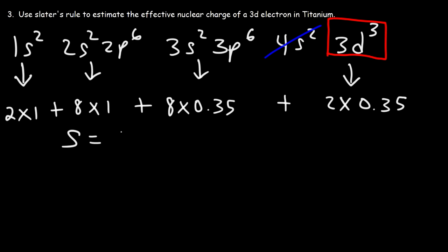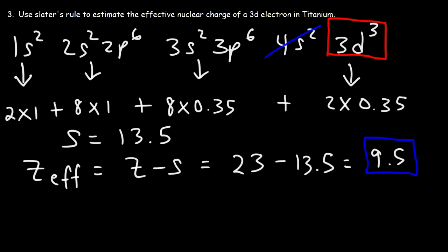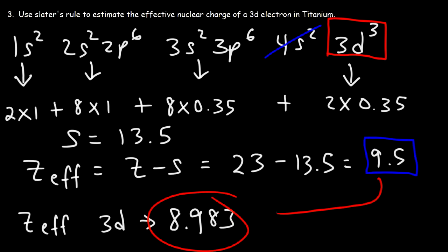The S value is 13.5. Now let's calculate the effective nuclear charge: Z minus S. The atomic number for titanium is 23, so 23 minus 13.5 equals 9.5. This is our estimation based on Slater's rule. According to Wikipedia, the effective nuclear charge for a 3d electron of titanium is reported as 8.983. So there's a significant deviation, but 9.5 is not too far from 8.983.